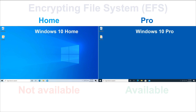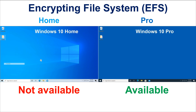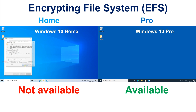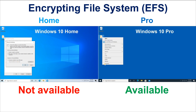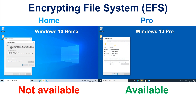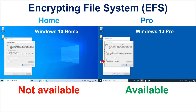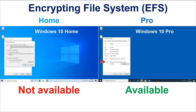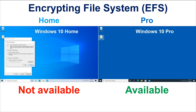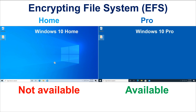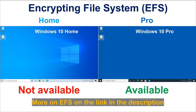The second security difference is Encrypting File System (EFS). EFS doesn't exist on Windows 10 Home but is available on Windows 10 Pro. EFS lets you selectively encrypt individual files or folders using a certificate. This option is greyed out in Windows 10 Home and available in Windows 10 Pro. It is very useful to protect your data in case someone tries to access it illicitly.